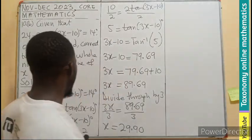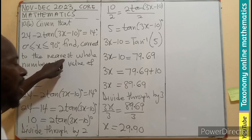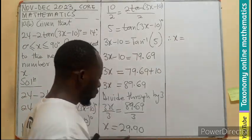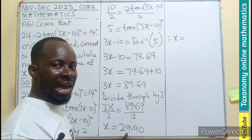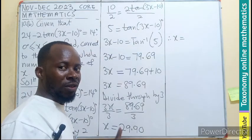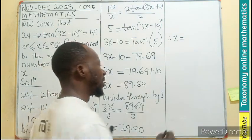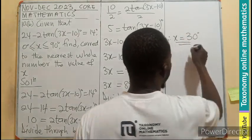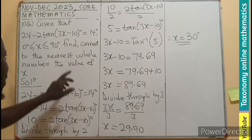But don't forget the question says write to the nearest whole number. So therefore, x equals, this is the whole number, 29. This is 9, so we approximate as 1 added to 29. 9 gives us 30 degrees. So the value of x in here.